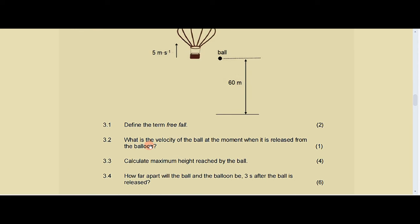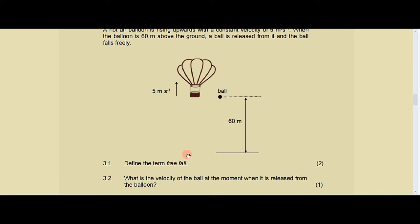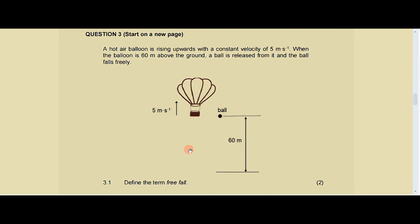Then 3.2 says: what is the velocity of the ball at the moment when it is released from the balloon? Now, as much as we've covered that when they write 'a ball is released' or 'a board is dropped' we say the initial velocity is zero — not with this one. This is a hot air balloon question, and we have to consider the law of inertia, or Newton's First Law, which says an object will continue in a state of rest or uniform motion unless an unbalanced force acts upon it. The ball was inside the hot air balloon moving at five meters per second, which means the ball was also experiencing a velocity of five meters per second.